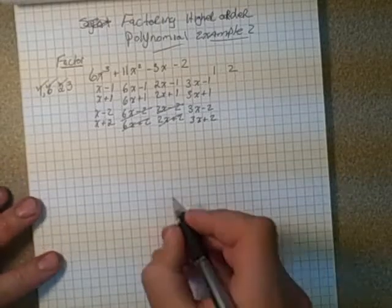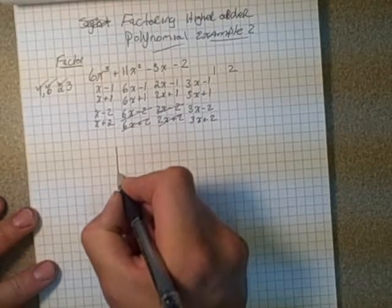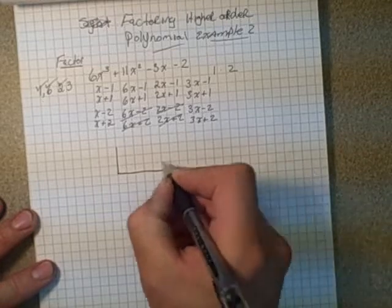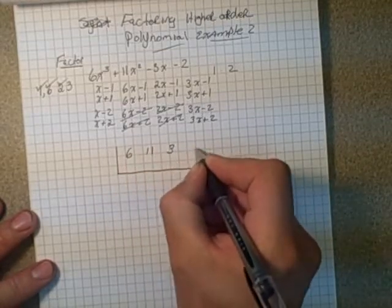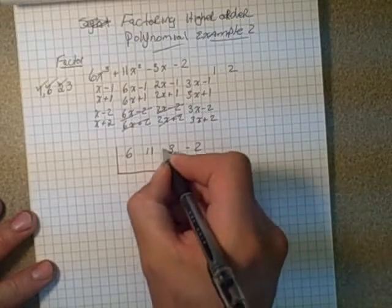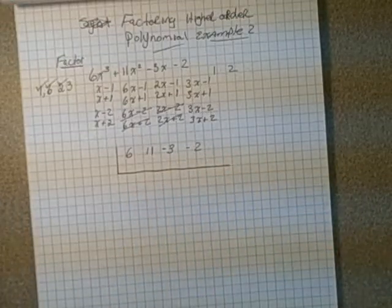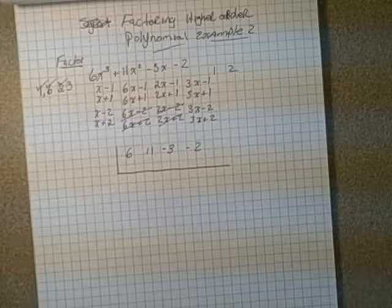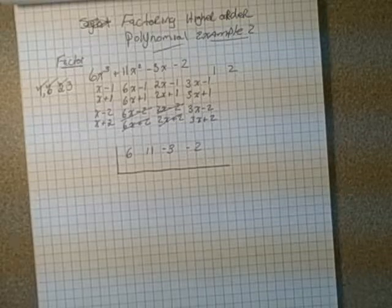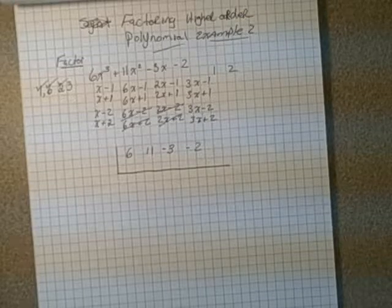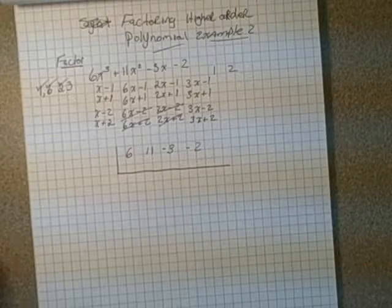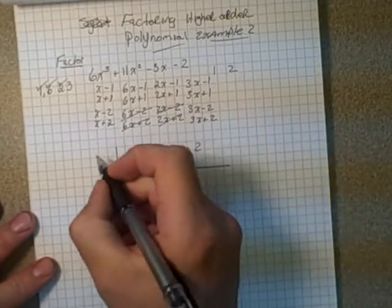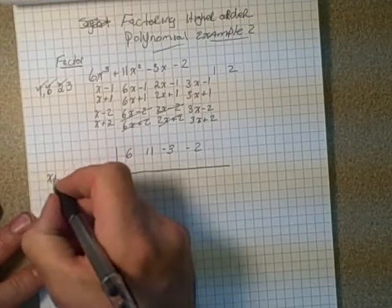Let's go with our synthetic division. I've got 6, 11, negative 3, and negative 2. Making sure I'm okay with that. I'm going to start by choosing, in this case, X plus 2.